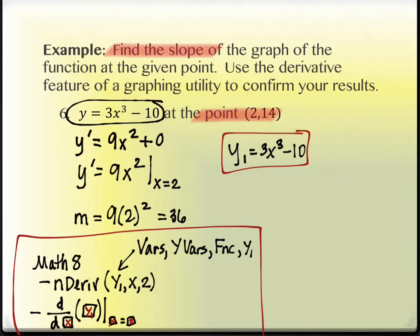Did anybody get 36? Reed did, Matthew did, Justin did as well. Did anybody's not work? Your calculator can check this problem because you're evaluating the derivative at a specific point — it can confirm that numerical answer.